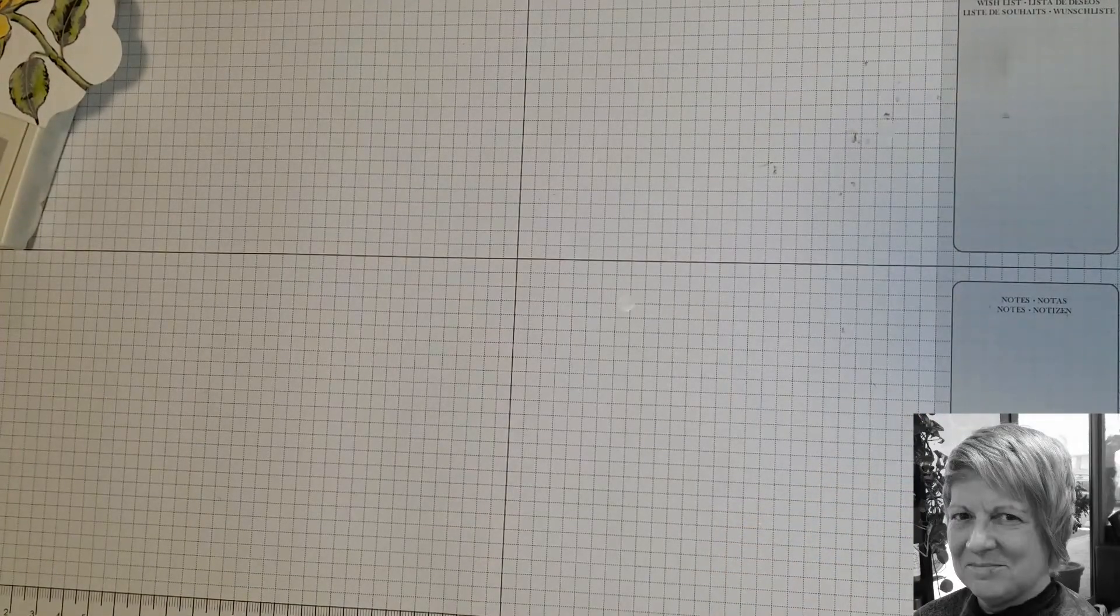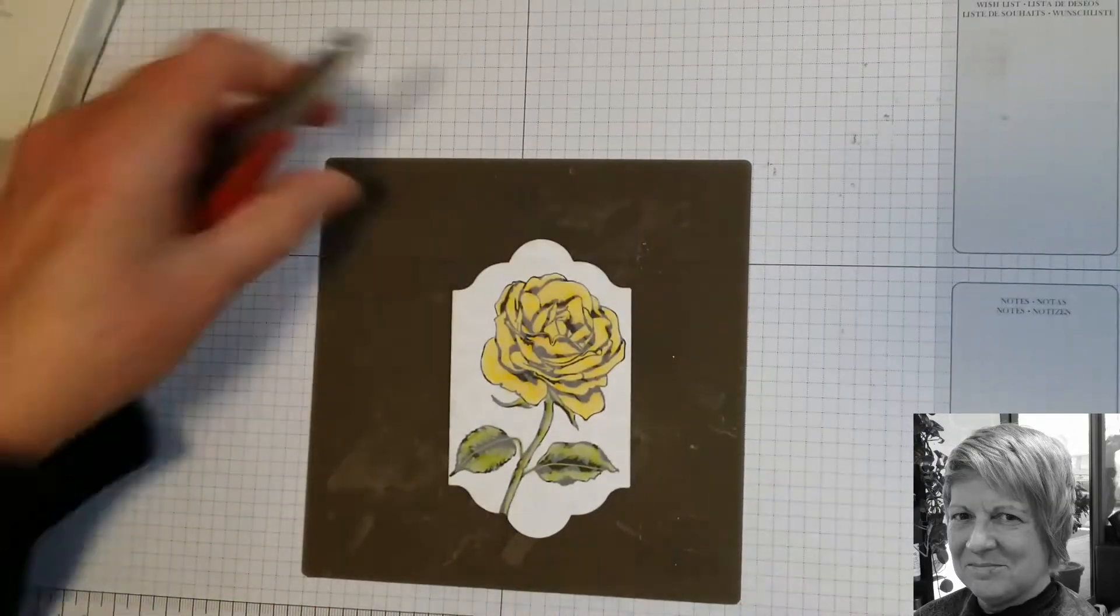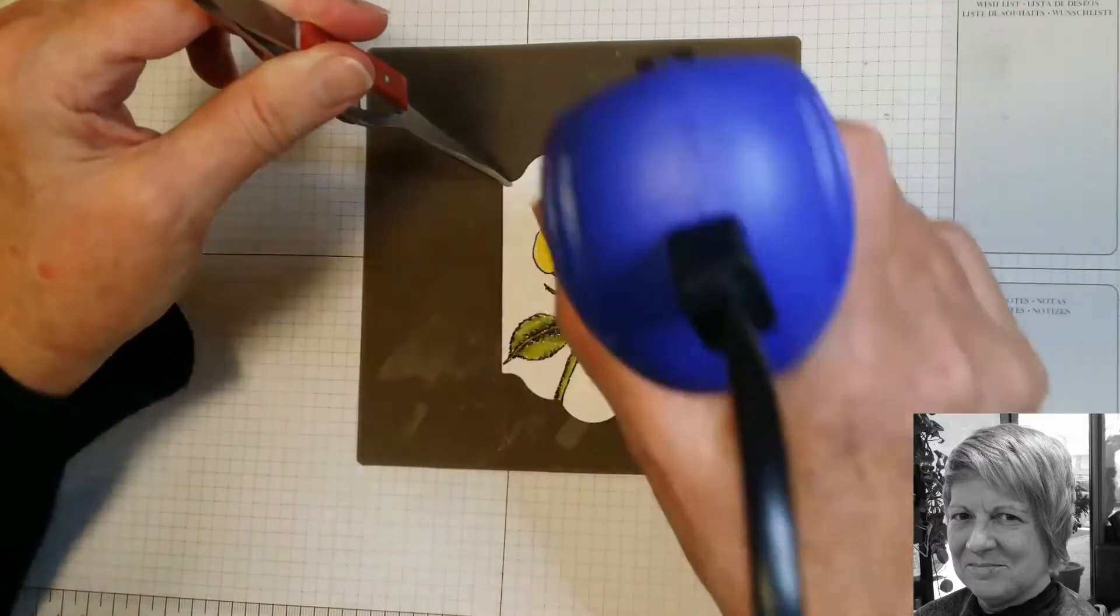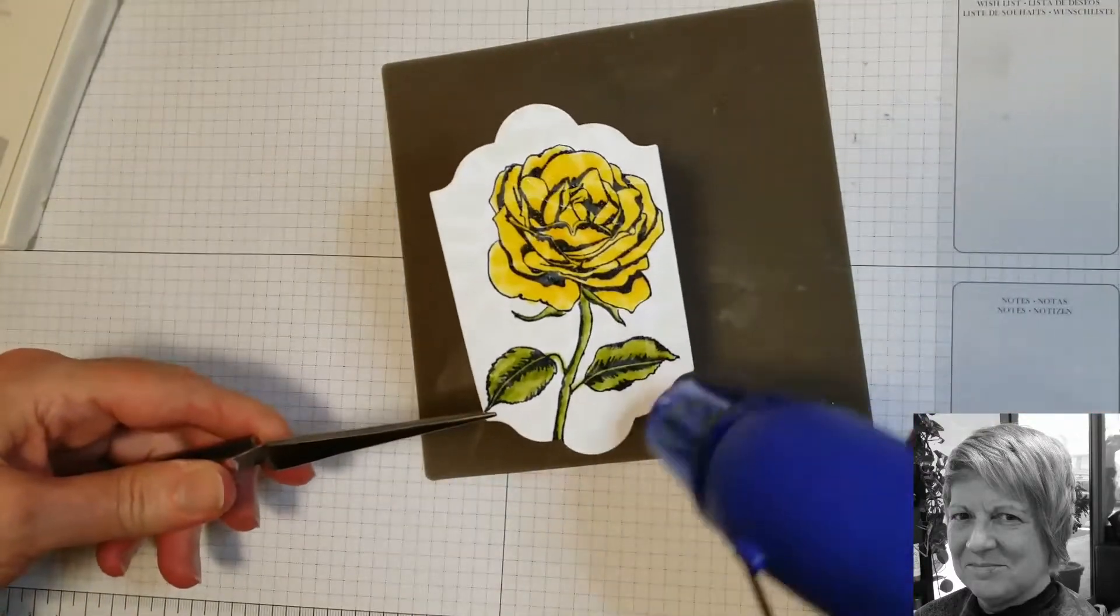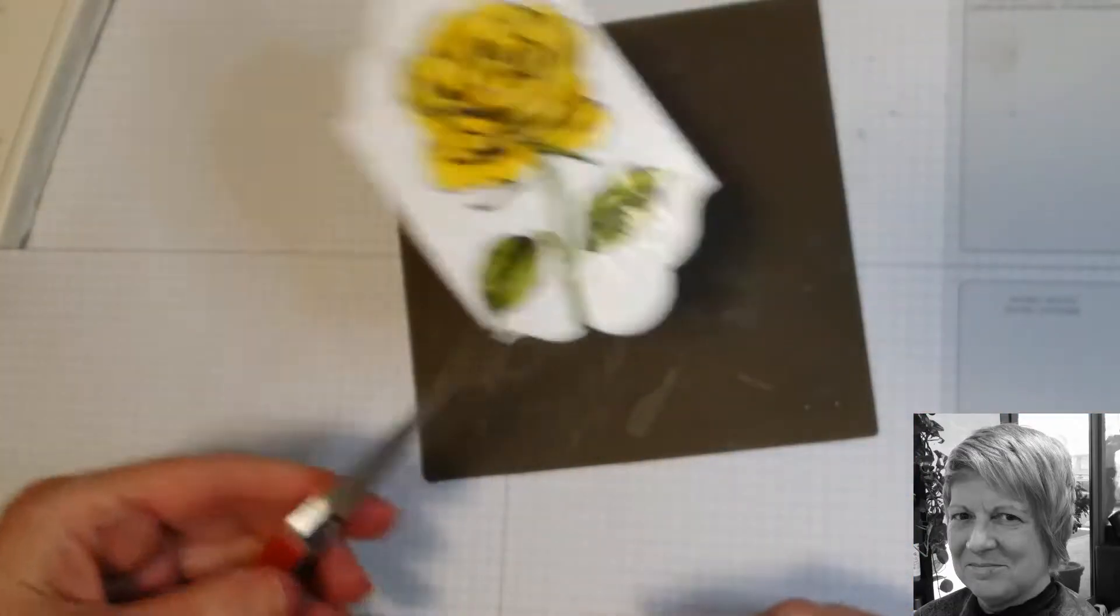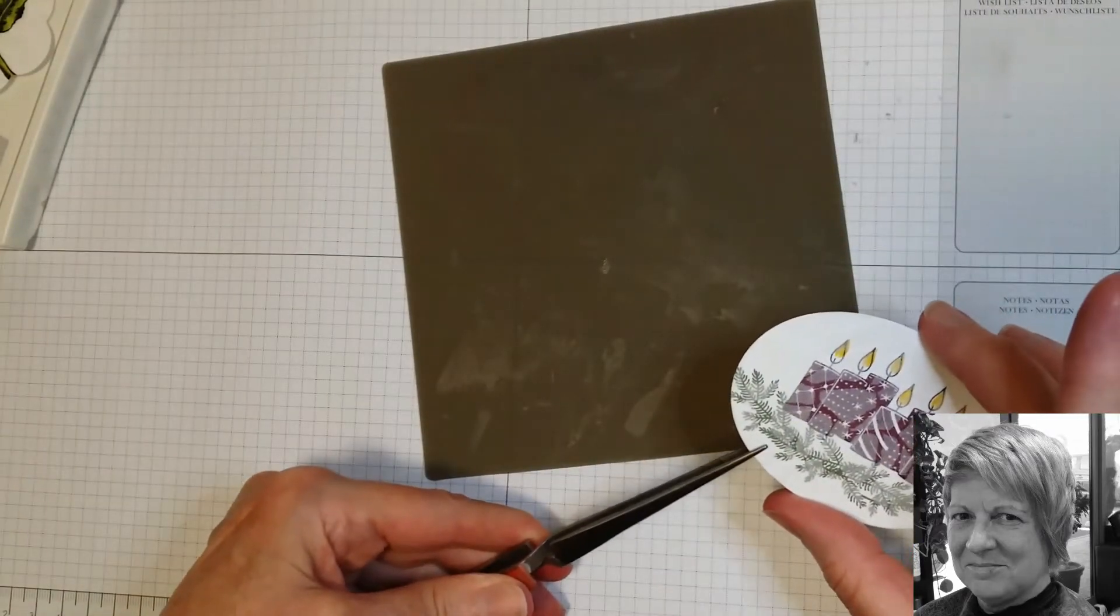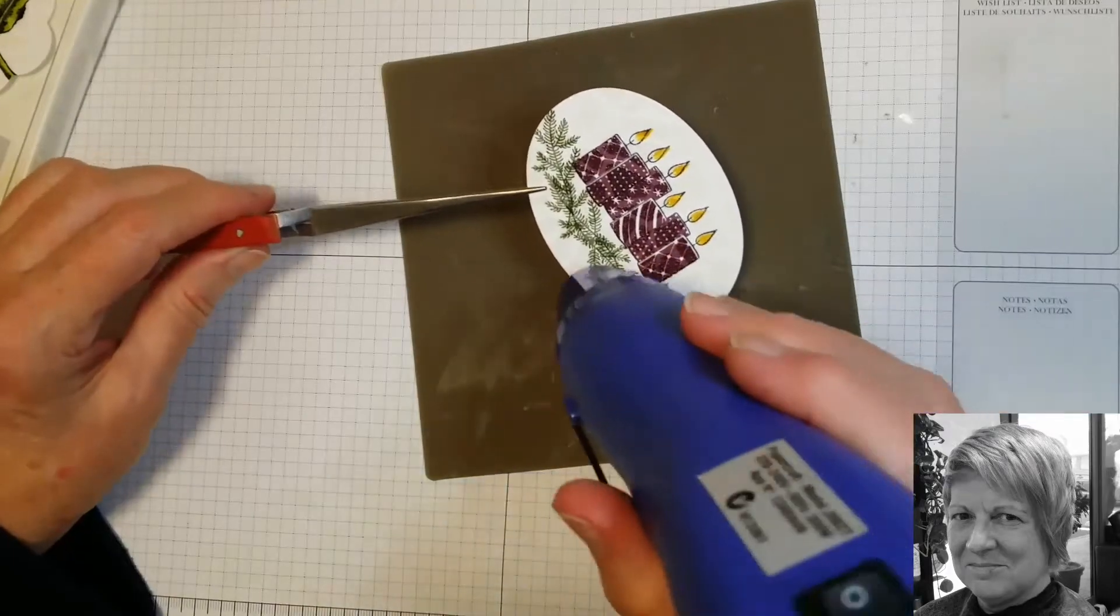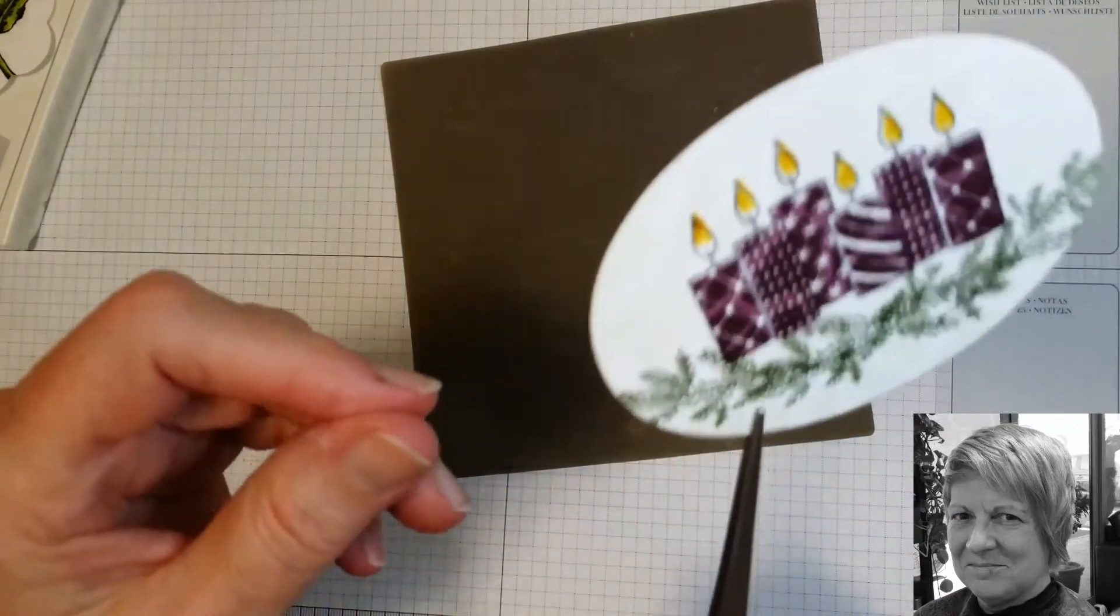Now we're just going to heat emboss it. Just excuse the noise for a minute while we do this. Okay, so you can see that's lovely and shiny there now. I'll just put that aside to cool while we do the candles. Let's find a place where there's no embossing powder that I can hang on to.